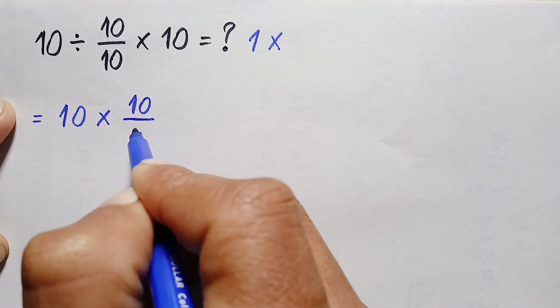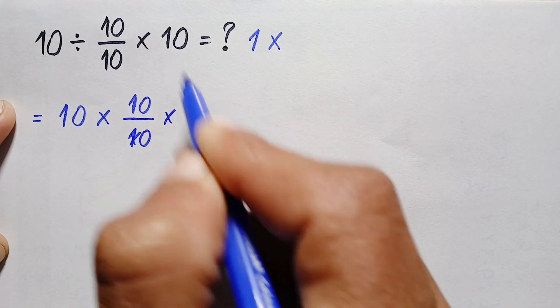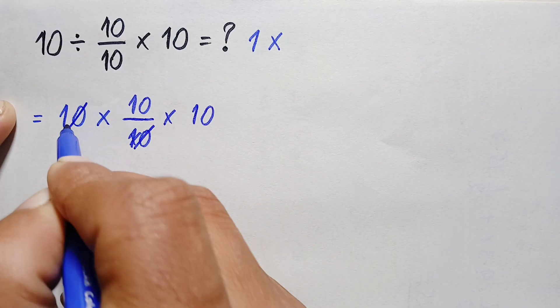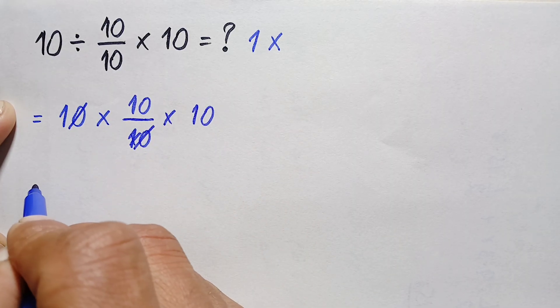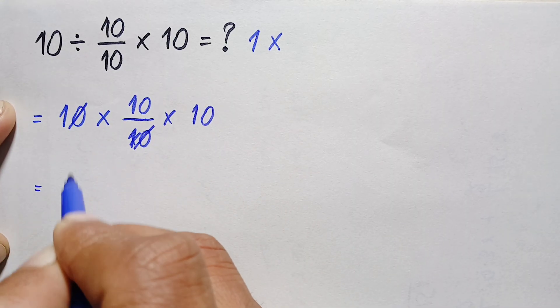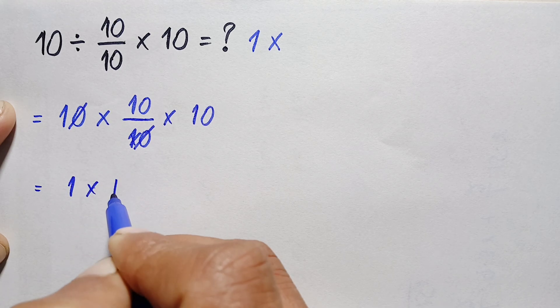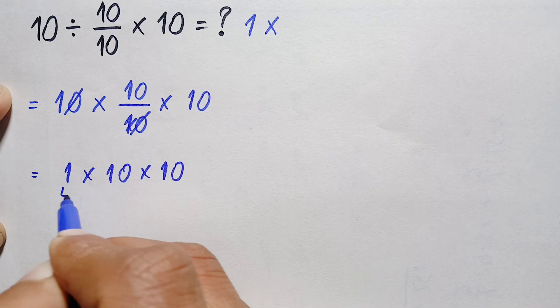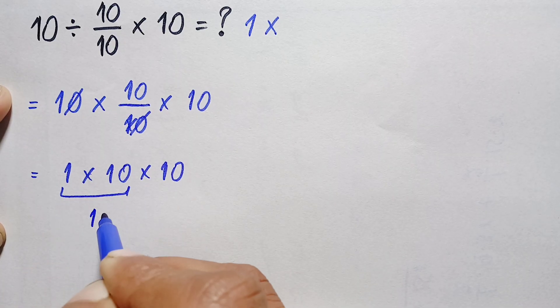We cancel this 10 with this 10, so this will become only 1. This part of the number will become 1 times 10 times 10, and 1 times 10 is simply 10 times 10.